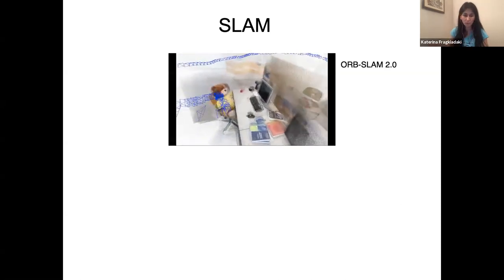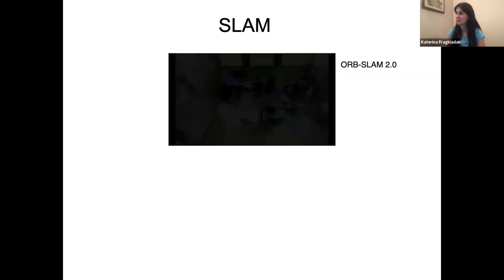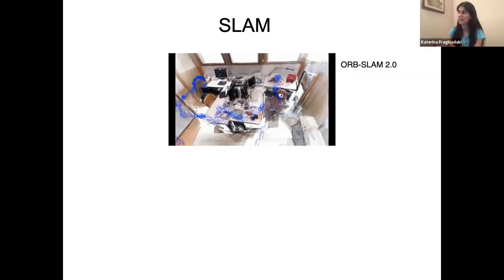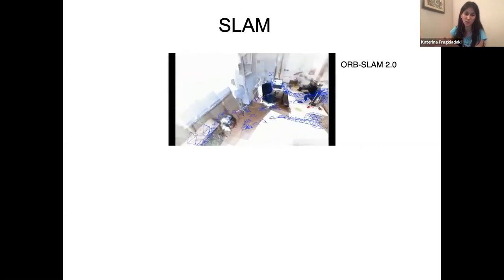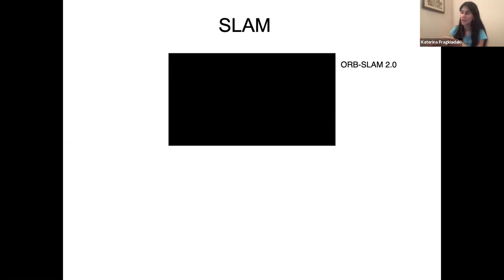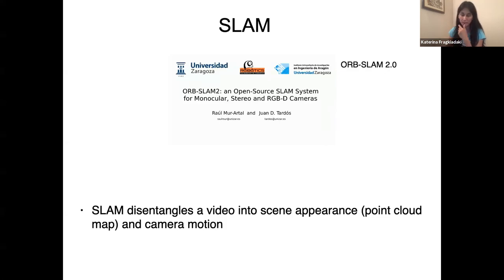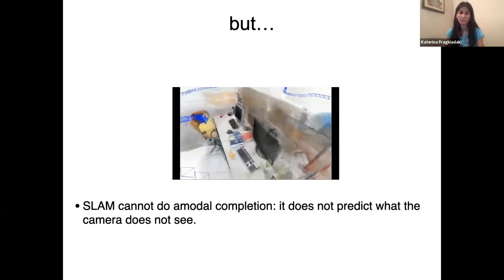ORB-SLAM 2 produces a nice point cloud map of a scene. In blue you see the camera pose at every time step — the camera trajectories. It takes lots of pictures of a scene and makes a stable 3D point cloud map, estimating camera motion. And yes, there is object permanence — a teddy bear was not visible in every frame. SLAM tries to do this disentanglement: separating camera motion from scene appearance.